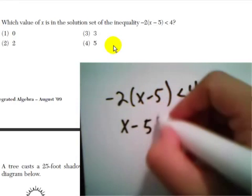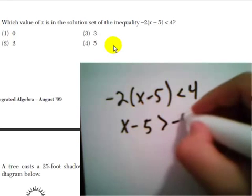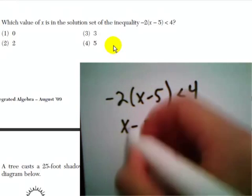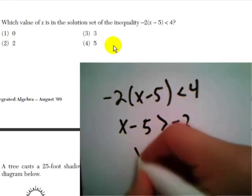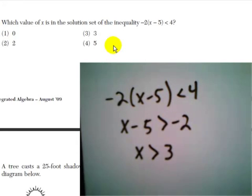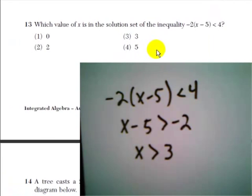So the next step is x minus 5 is greater than negative 2. Now we're going to add 5 to both sides, so x is greater than 3. So x is greater than 3 is the solution set of this inequality.